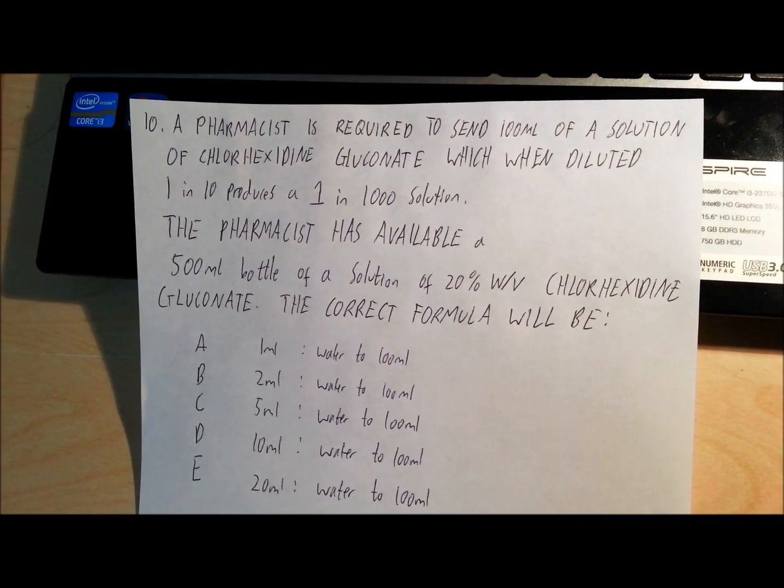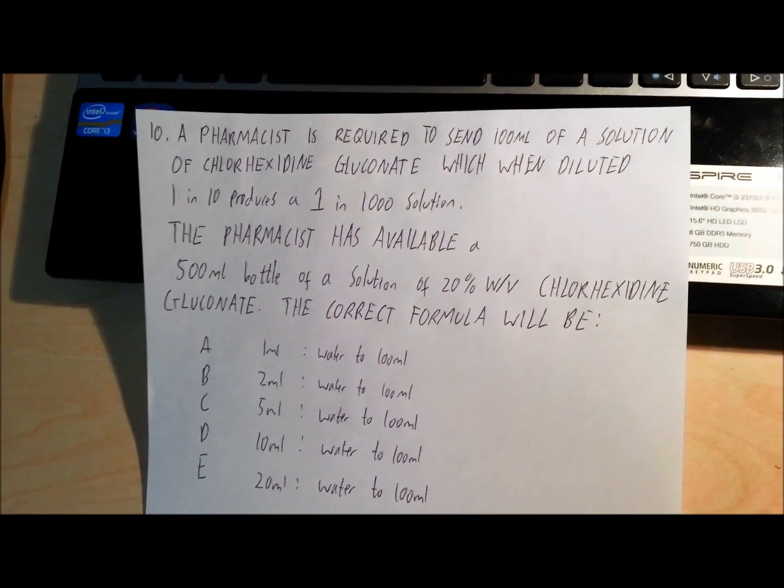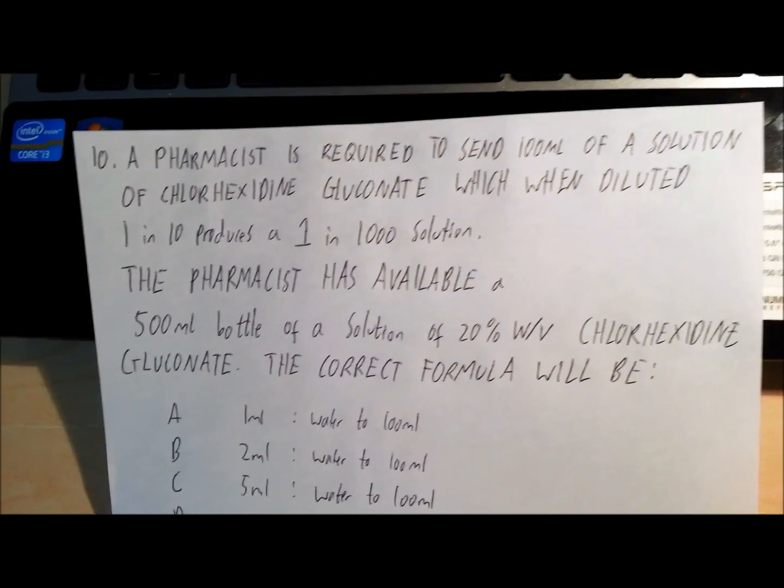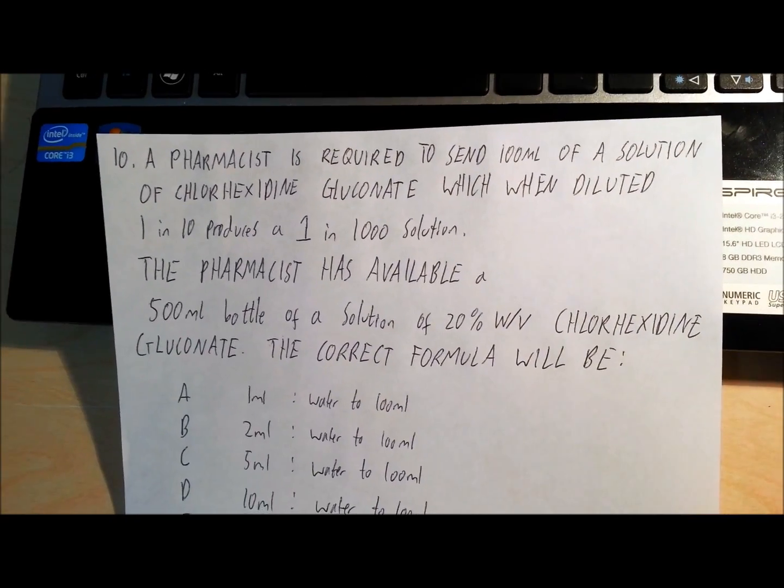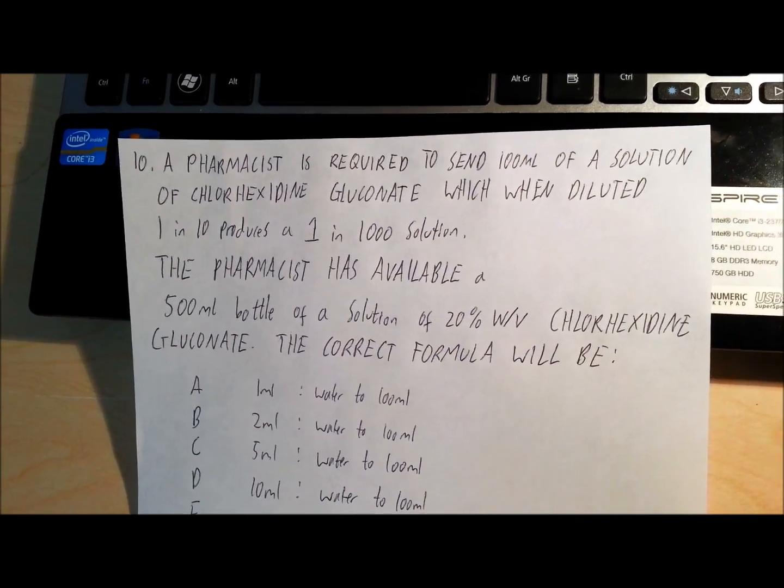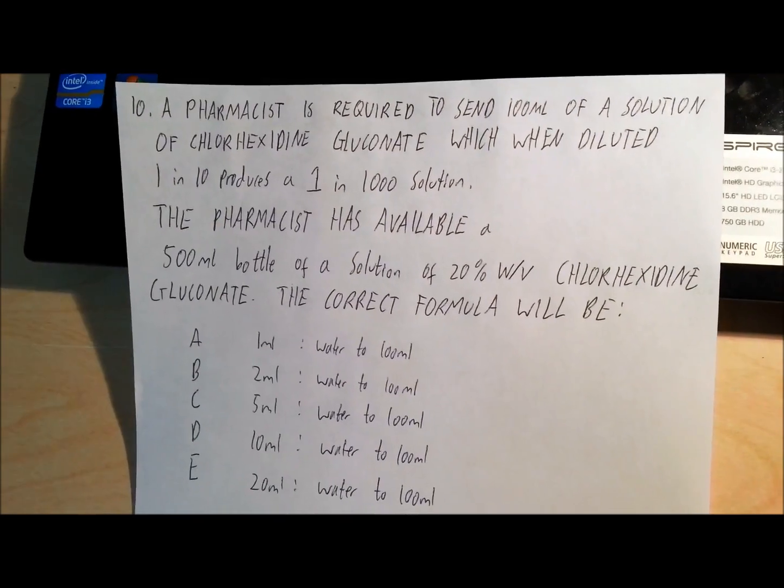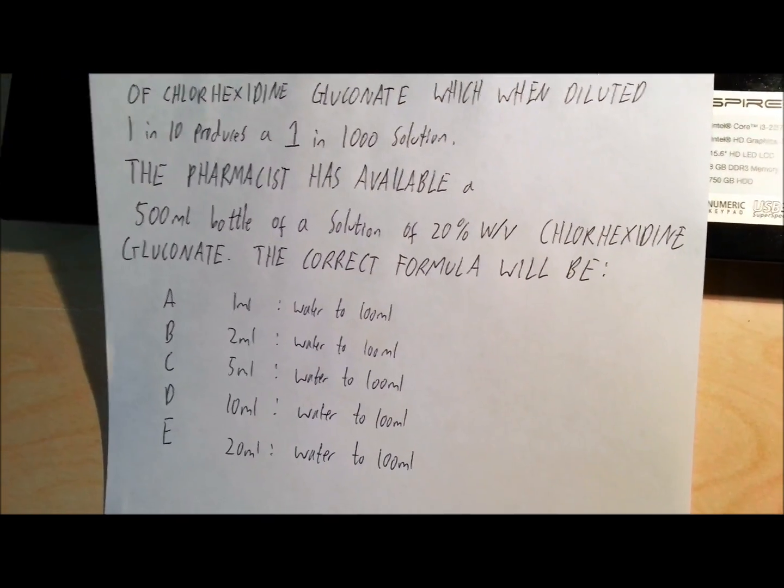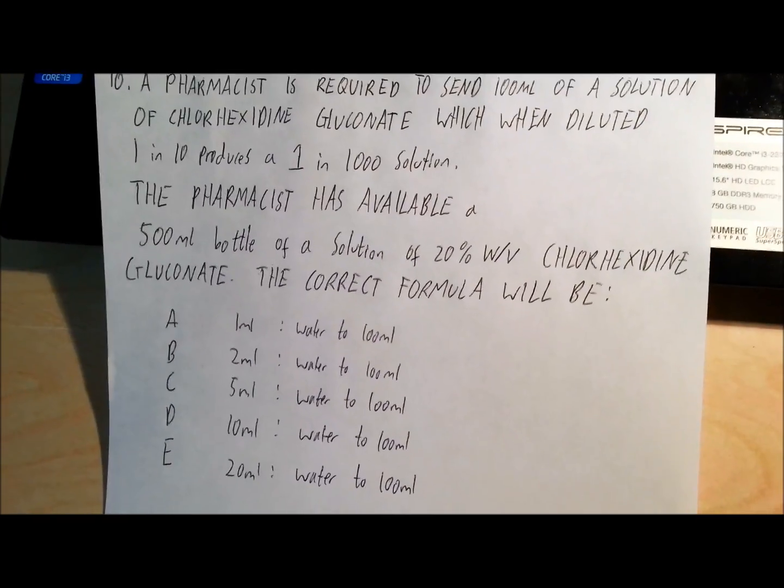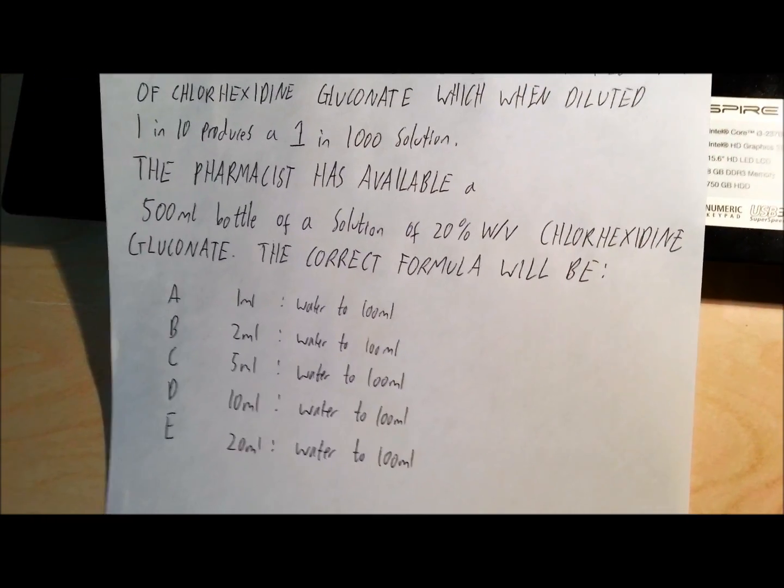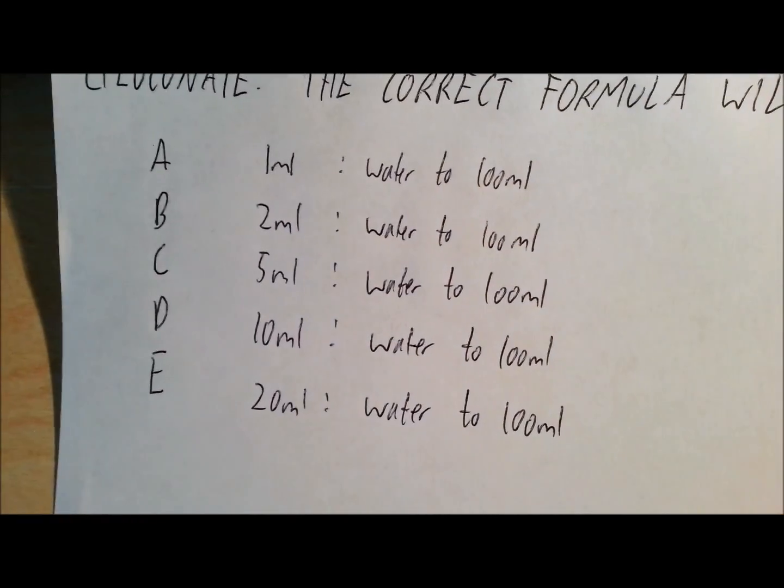A pharmacist is required to send 100 milliliters of a solution of chlorhexidine gluconate, which when diluted 1 in 10 produces a 1 in 1,000 solution. The pharmacist has available a 500 milliliter bottle of a solution of 20% W over V chlorhexidine gluconate. The correct formula will be either A, B, C, D or E.